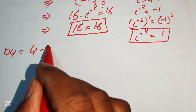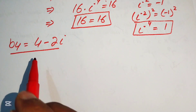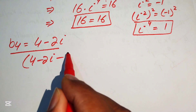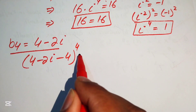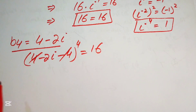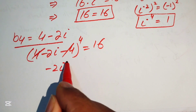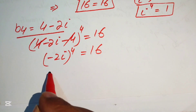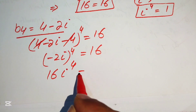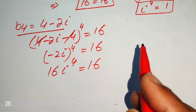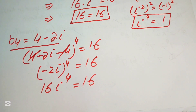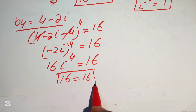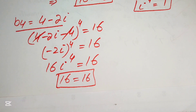For b4 equals 4 minus 2 iota: substituting gives (4 minus 2 iota minus 4) to the power 4 equals 16. The 4 and minus 4 cancel, giving (minus 2 iota) to the power 4 equals 16. Since (minus 2) to the power 4 equals 16 and iota to the power 4 equals 1, we get 16 equals 16. All four values of b satisfy the equation.